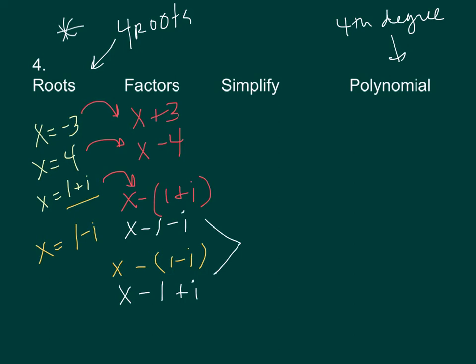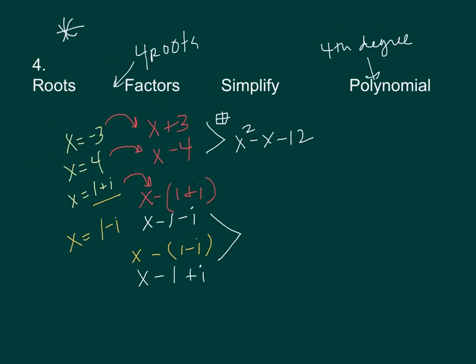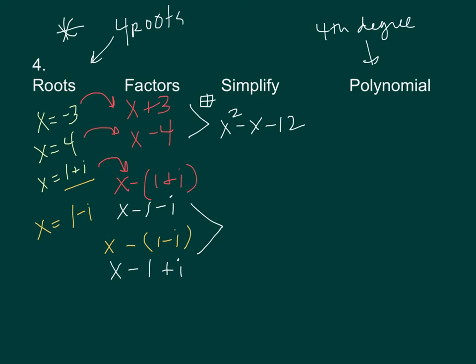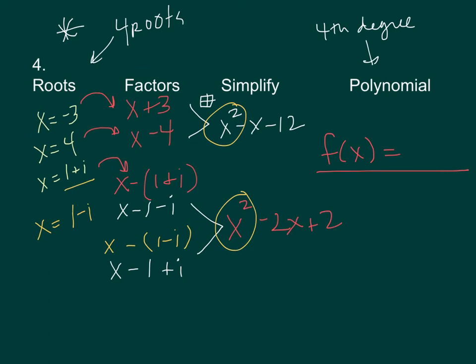Multiply the real-root factors together and the complex-root factors together. Multiplying x plus 3 and x minus 4 using a box gives x squared minus x minus 12. And multiplying the complex pair together — which we'll work out — gives x squared minus 2x plus 2. We should get a 4th degree polynomial since x squared times x squared gives x to the fourth.